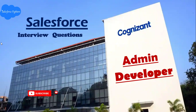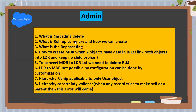Starting the questions — admin job requirement questions: What is the cascade delete? Second question: What is the role of rollup summary and how can we create it? Next question: What is re-parenting? Next question: How to create a master-detail relationship, when to use it, and how data is linked between both objects.